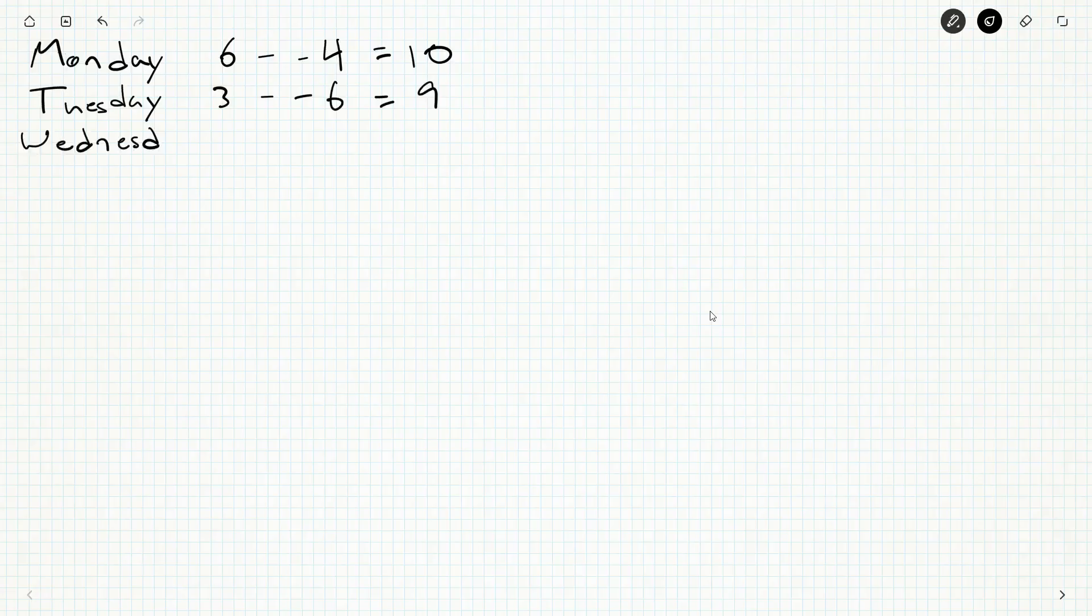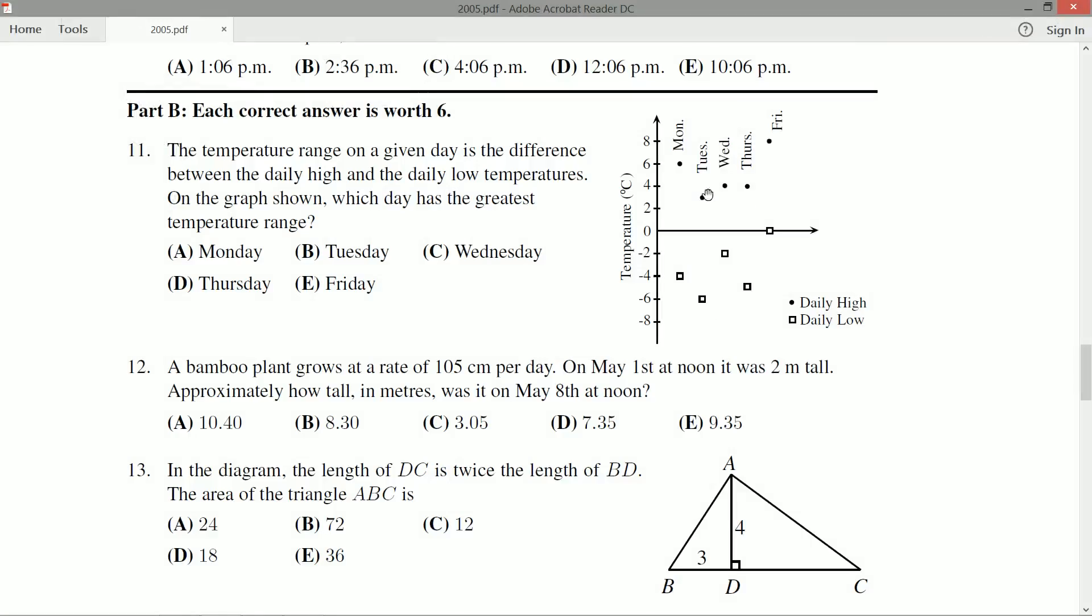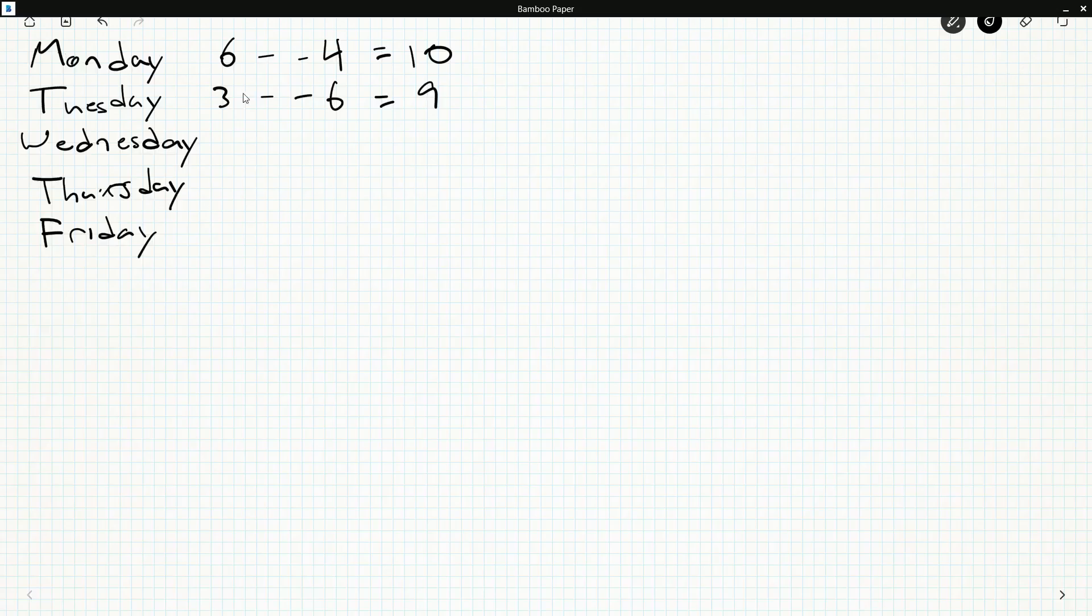We'll get Wednesday in here, Thursday, and Friday. So Wednesday's high is four, so is Thursday's high, and Friday's high is eight. Let's fill those in now.